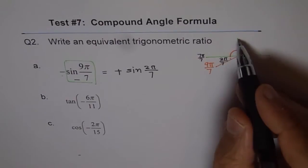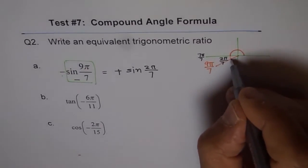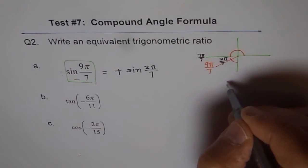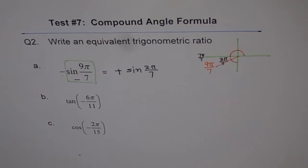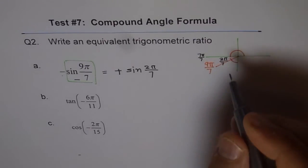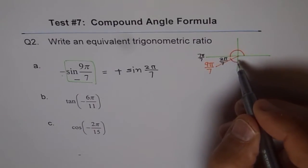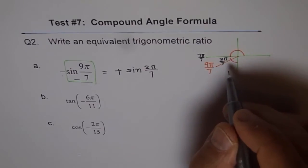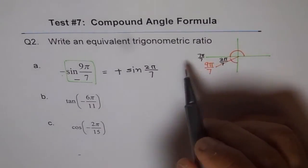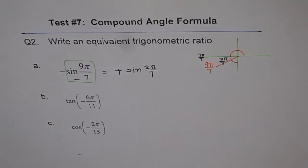Co-function identities are with the verticals, not with the horizontal. So with the vertical, how much angle do we make? That is the question. In this particular case, where it is 2π by 7, so sine 2π by 7 is an equivalent trigonometric ratio for minus sine 9π by 7.